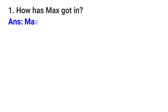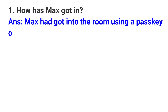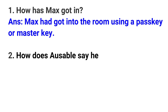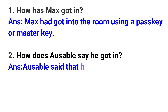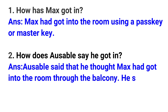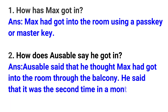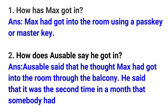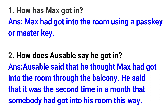Question: How did Max get in? Answer: Max had got into the room using a pass key or master key. Question: How does Ausable say he got in? Answer: Ausable said that he thought Max had got into the room through the balcony. He said that it was the second time in a month that somebody had got into his room this way.